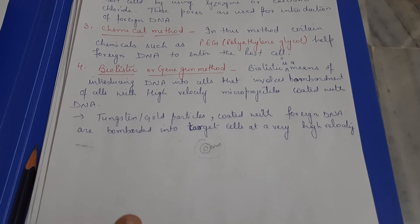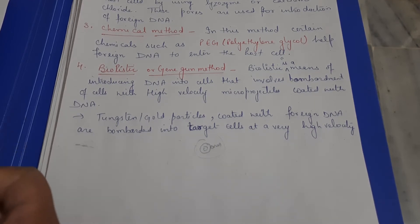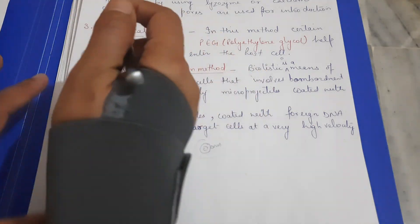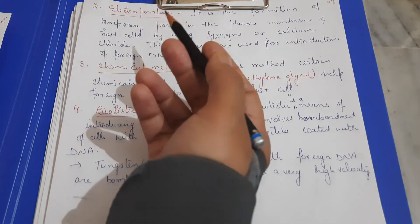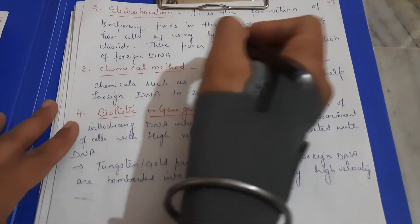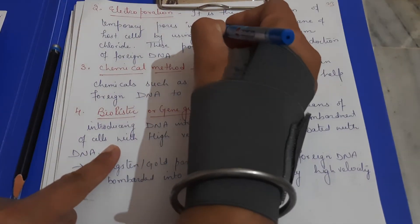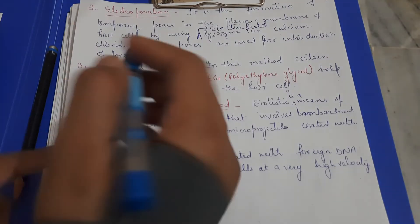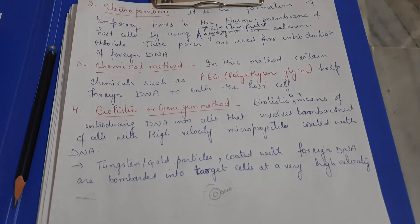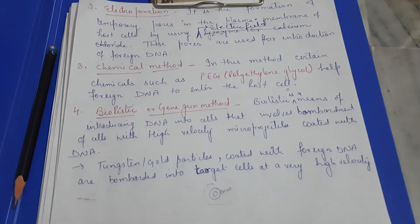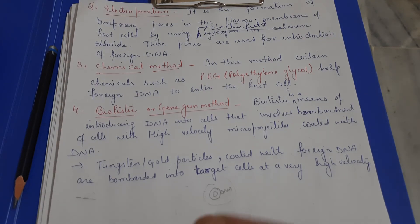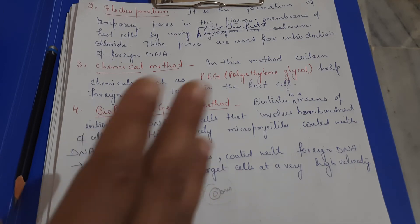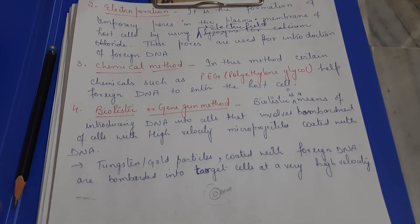So, to summarize the vectorless methods: first is micro-injection; second is electroporation, which uses an electric field to create holes in the plasma membrane so DNA can enter; third is the chemical method using polyethylene glycol; and fourth is the ballistic or gene gun method. These are different methods used to insert foreign genes of interest into the host.